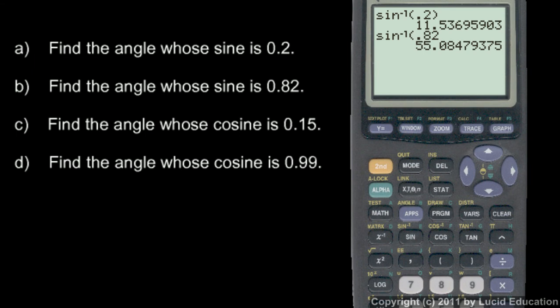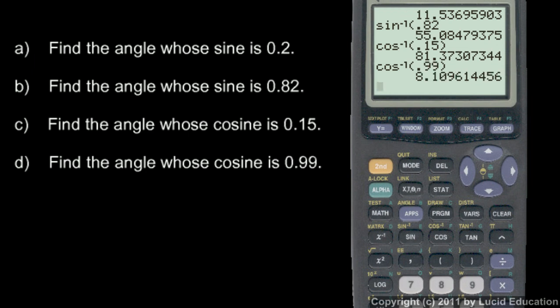And find the angle whose cosine is 0.15, this is cosine now, so we do inverse cosine 0.15, and we get 81.37 degrees. And find the angle whose cosine is 0.99, so inverse cosine of 0.99, is 8.1, we'll round that to 8.11 degrees.